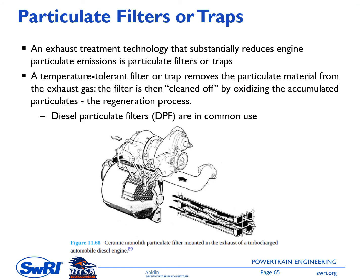The next topic is particulate filters or traps — an exhaust treatment technology that substantially reduces engine particulate emissions. This feature shows a ceramic monolith particulate filter mounted in the exhaust of a turbocharged diesel engine. At some point, the trapped particles need to be cleaned off; this process is called regeneration, where the particles are oxidized or burned so that the pressure drop across the filter decreases back to normal. The diesel particulate filter (DPF) is in common use for reducing particulate emissions.